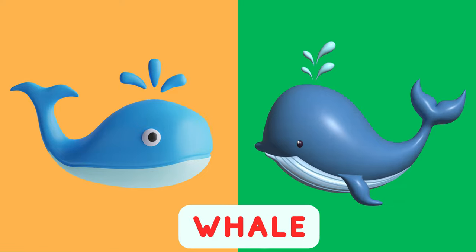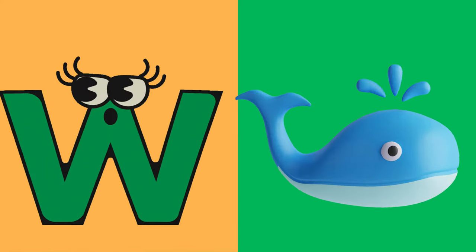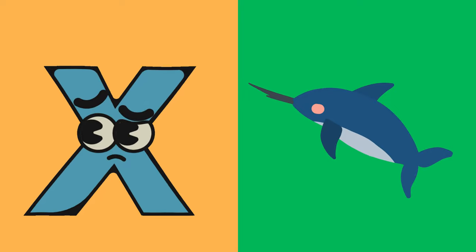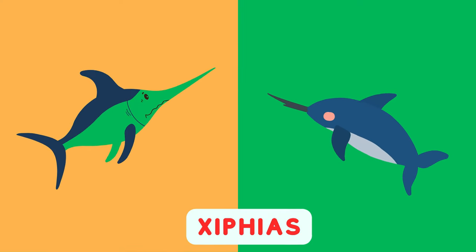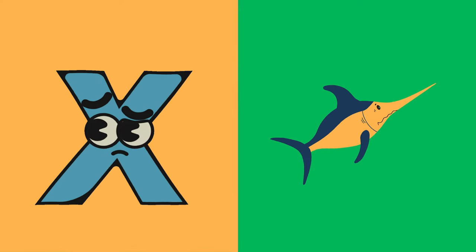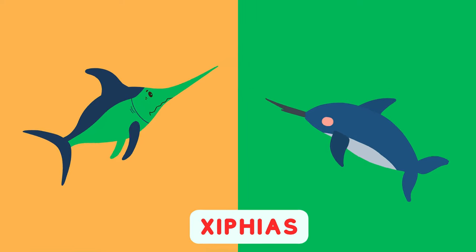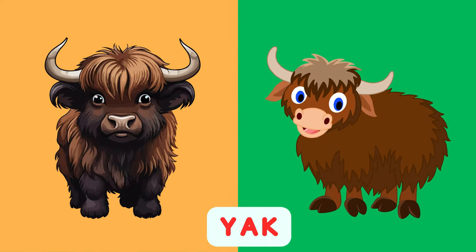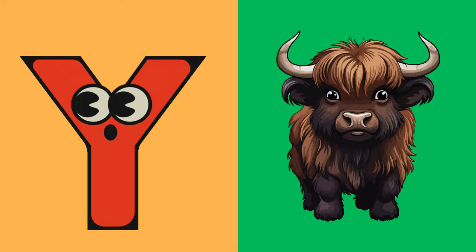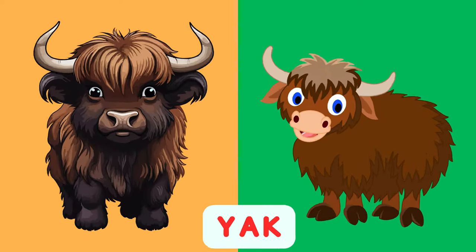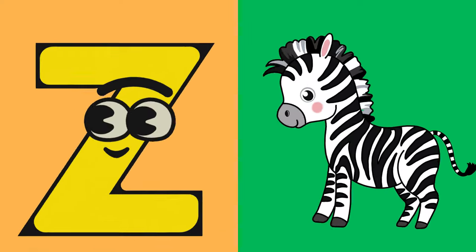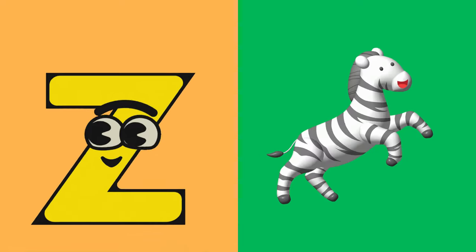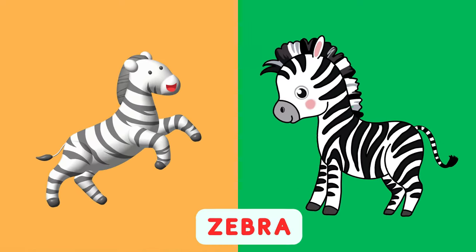W is for Whale, W, W, Whale. W is for Whale, W, W, W. X is for Xepheus, X, X, Xepheus. X is for Xepheus, X, X, X. Y is for Yak, Y, Y, Yak. Y is for Yak, Y, Y, Y. Z is for Zebra, Z, Z, Z, Zebra. Z is for Zebra, Z, Z, Z.